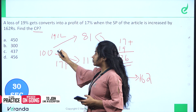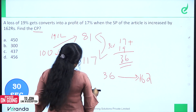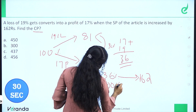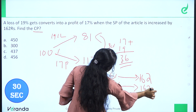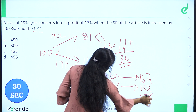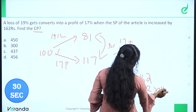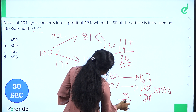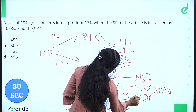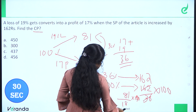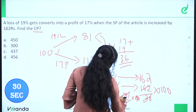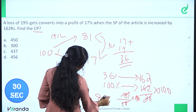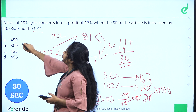We assume Cost Price corresponds to 100 percent. The difference of 36 units equals 162 rupees, so Cost Price = 162 divided by 36 multiplied by 100. Simplifying: 81 by 18 × 100, then 9 by 2 × 100, giving 4.5 × 100 = 450 rupees.